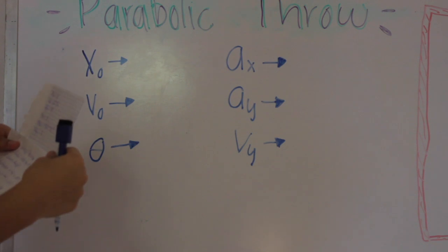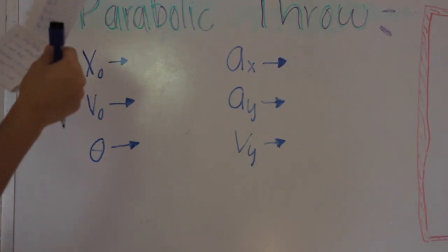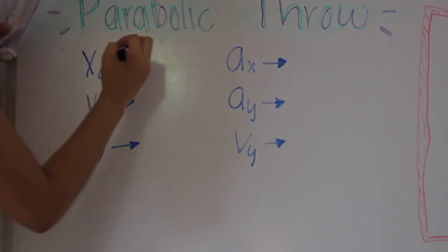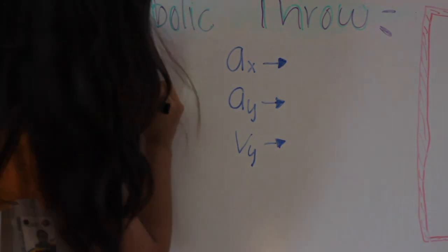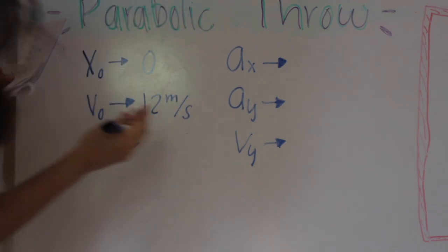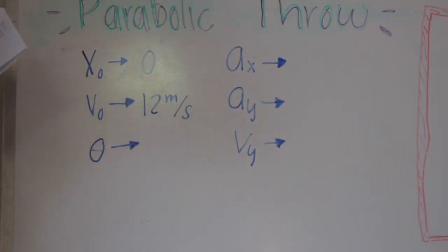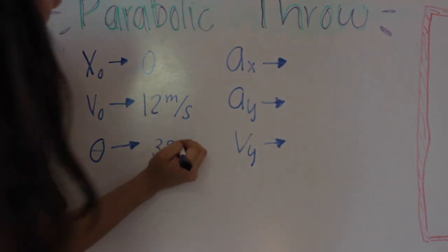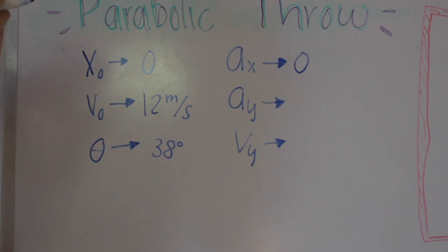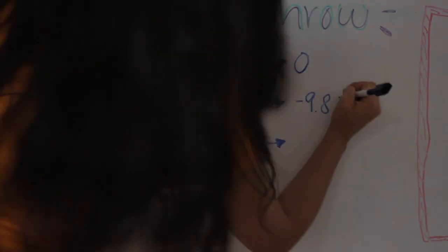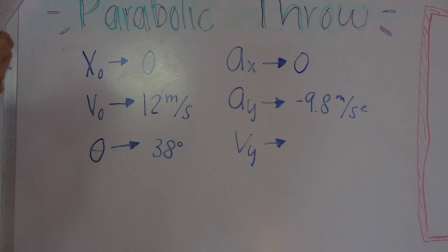Now I will state the data that we know and the data that we don't know. The initial position is 0. The initial velocity is 12 meters per second. The launch angle is 38 degrees. The acceleration in the X axis is 0. The acceleration in the Y axis is minus 9.8 meters per second squared. The vertical velocity at the highest point is 0.